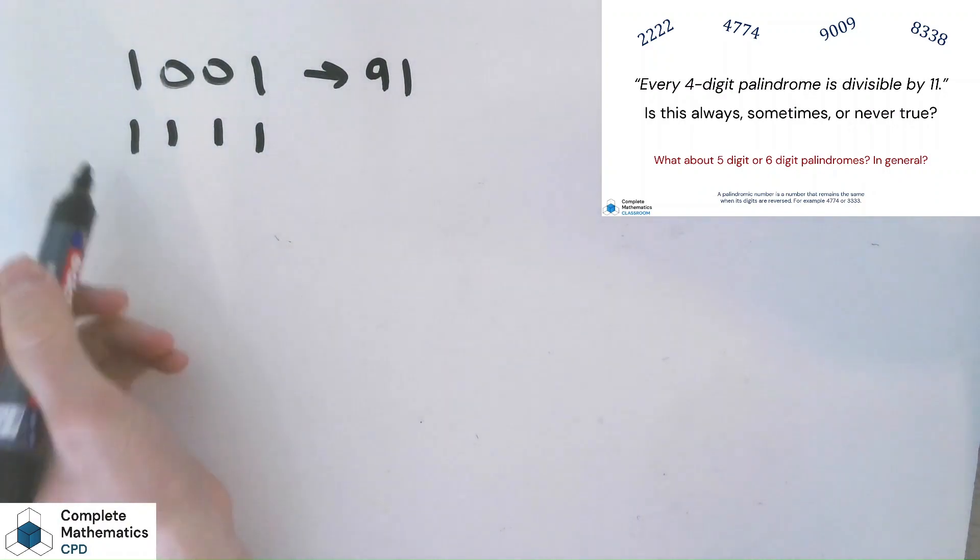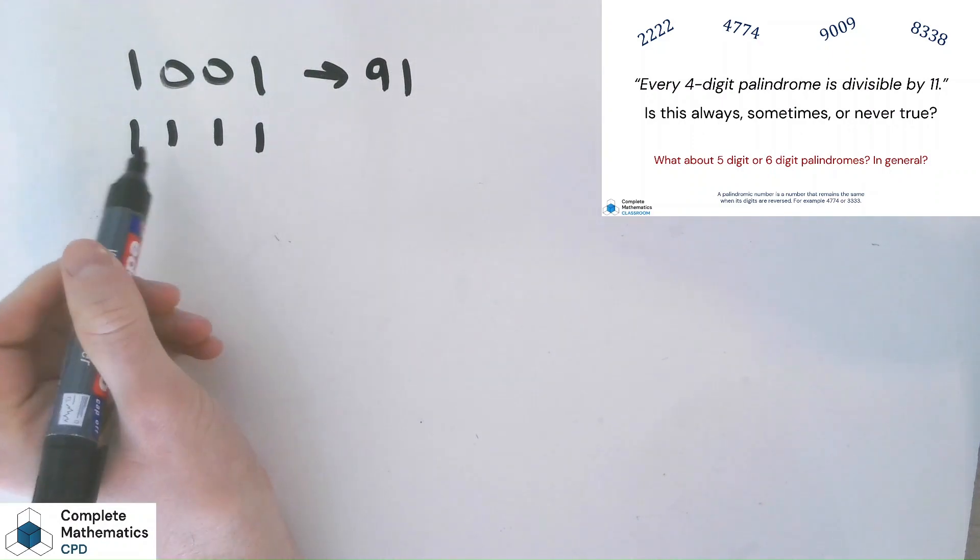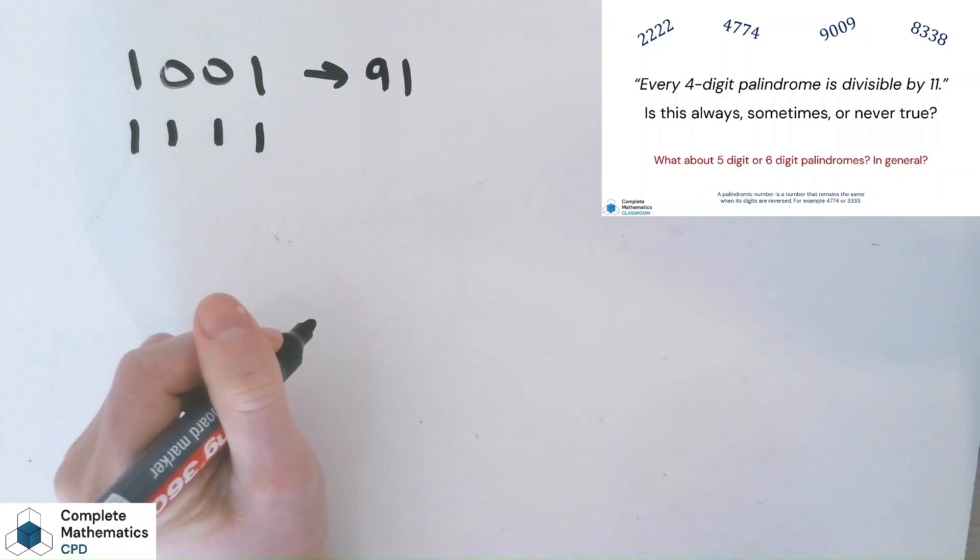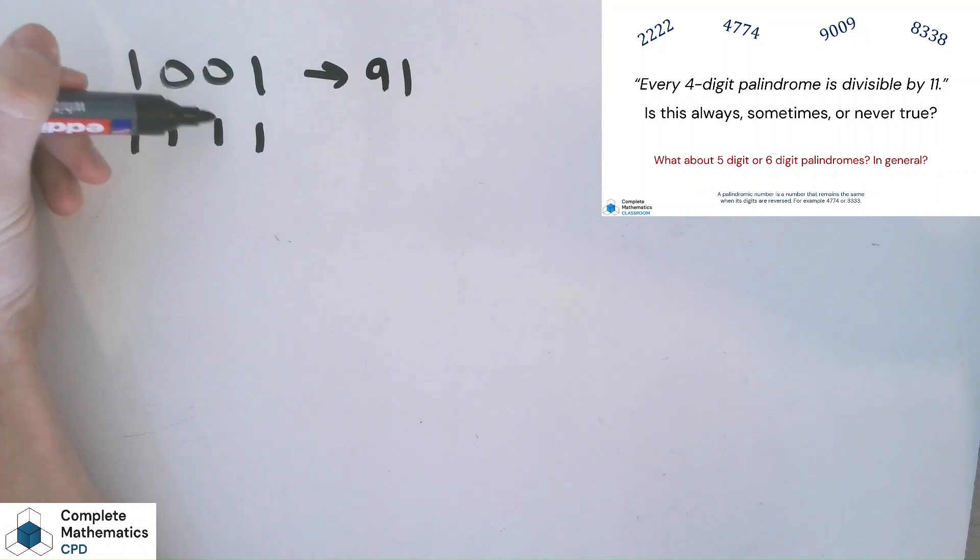Now, how do I know without calculating that this is still going to be divisible by 11? Well, it's the tens and the hundreds which have both increased by one. We've increased it by 110. And 110 is divisible by 11. It's 10 lots of 11.